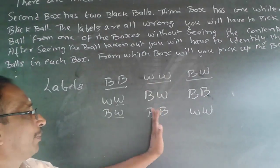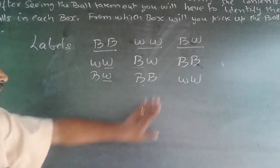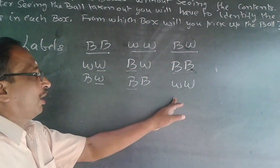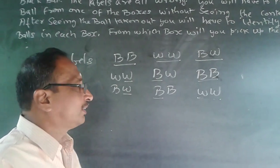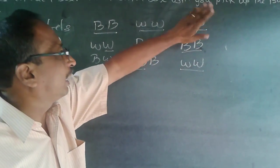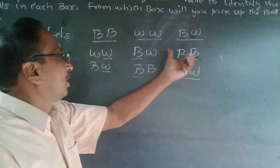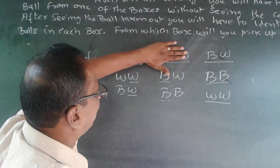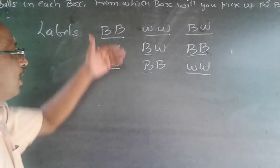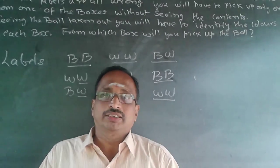Similarly, if I pick a ball from the white and white label box and get a black ball, I'll be confused whether the combination is black and white or black and black. So I should not pick from there either. However, if I pick a ball from the black and white label box, and I get a black ball, both balls will be black. If I get a white ball, both balls will be white. This uniquely determines the contents, and the other boxes can be filled in accordingly. So the answer is always to pick from the mixed color — the black and white label box.